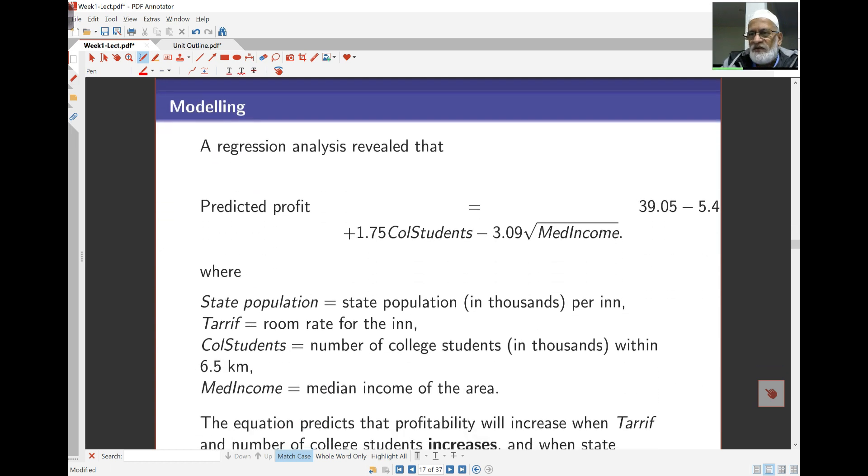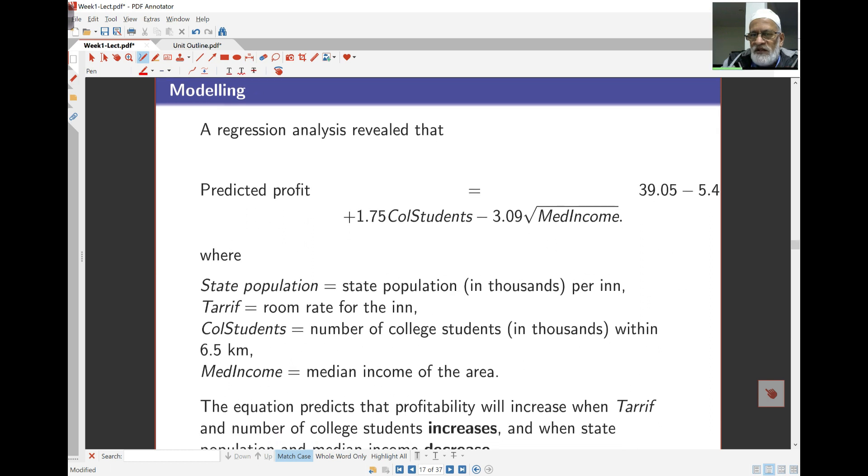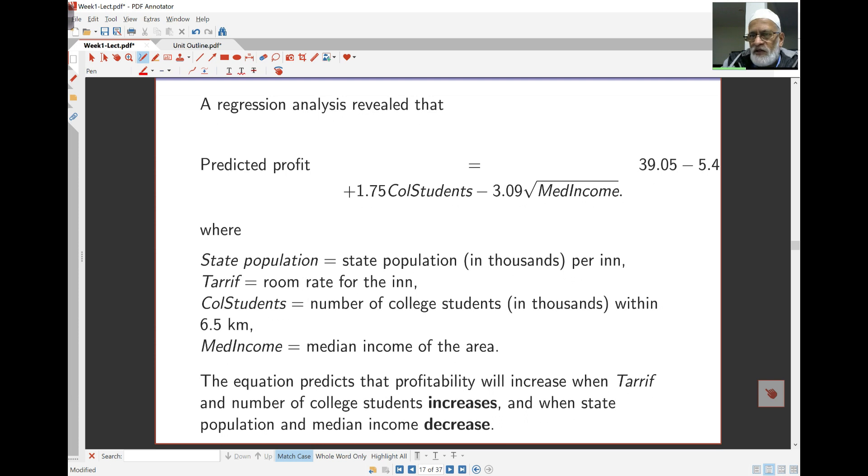Regression analysis revealed the following. The predicted profit was equal to 39.05 minus, there's a bit of typing problem here, I'll fix this afterwards. Something to do with state population, the tariff or room rate, college students, the number of college students in thousands within a 6.5 kilometer radius, and the median income. As I said, the equation is unfortunately messed up, I'll fix this afterwards so you can look at this online.